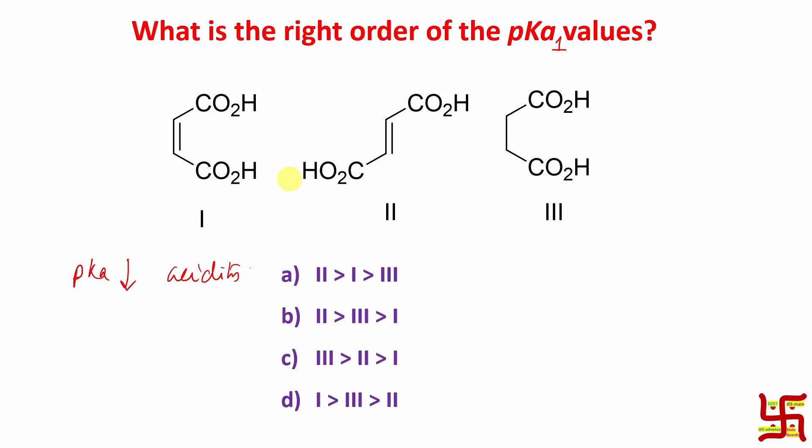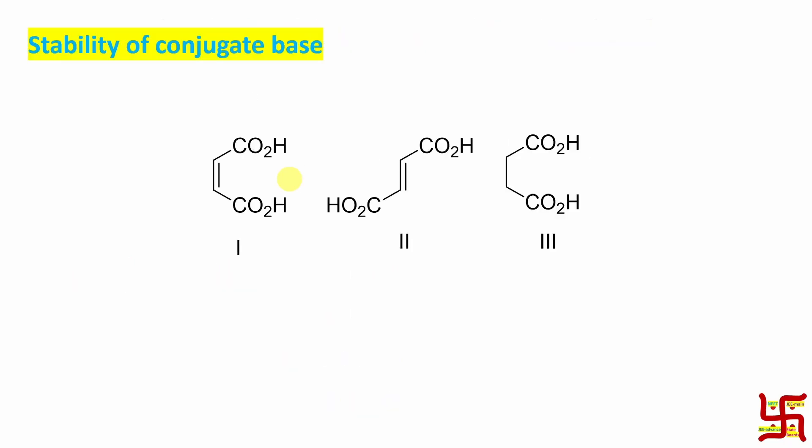So remember student whenever this problem about acidity is asked, you need to think one point that is stability of conjugate base. What is conjugate base? If you remove one proton, whatever anionic part is remaining, that is called as the conjugate base. So let's draw it.